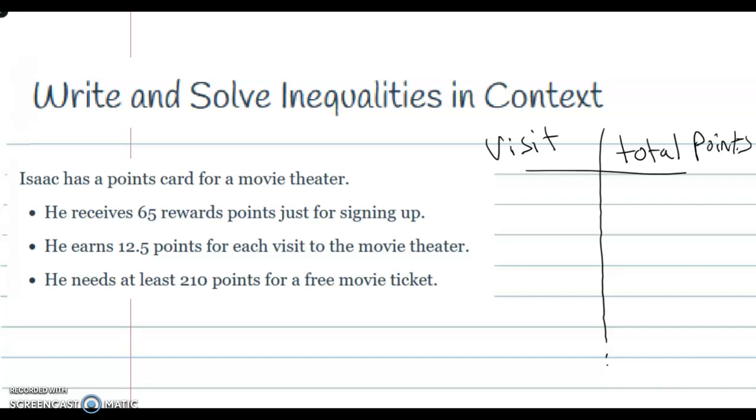Let's say he hasn't had any visits at all. Well, he's already given 65 reward points, so at zero visits he's at 65. Let's say he's at one visit, so it'll be 65 plus the 12.5.